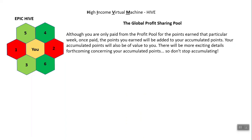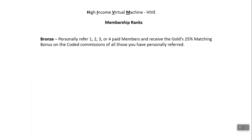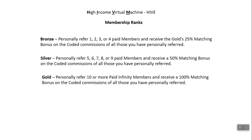The Epic point value is calculated every Saturday at 24:00 GMT and paid out every Sunday at 01:00 GMT. Although you are only paid from the profit pool for points earned that particular week, once paid, those points are added to your accumulated points, which will also be of value to you — so don't stop accumulating. The final opportunity to make earnings is called membership rank. You get a rank of either bronze, silver, or gold based on the number of personally referred paid members. With one to four paid members, you receive a 25% matching bonus on the coded commission of all those you personally referred. With five to nine, you get 50% matching bonus. With ten or more paid Infinity members, you become gold and receive a 100% matching bonus.